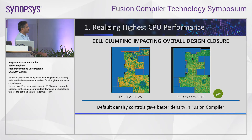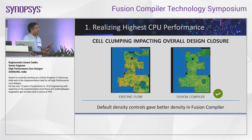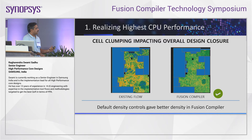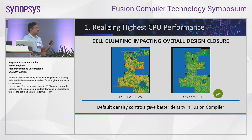With this flow, our key observation was the density map improvement. Both runs used the same input data, but the DC Next and ICC2 flow showed a lot of density hotspots, whereas the Fusion Compiler default run gave a very good density spread — with only a few minor hotspots. This resulted in a much better design closure path.